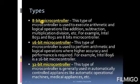What are the different types of microcontrollers? We have the 8-bit microcontroller, 16-bit microcontroller, and 32-bit microcontroller. This is a classification based on bit size. The 8051 is a very popular 8-bit microcontroller. The Intel 8096 is a 16-bit microcontroller. The 32-bit microcontroller is generally used in automatically controlled appliances like automatic operational machines and medical appliances.